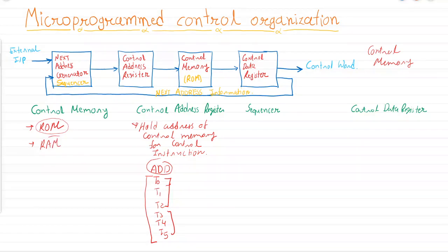RAM holds content that can be altered and stores user process data, while control memory content is fixed and cannot be altered. In short, all instructions are static by nature at the hardware level. Whatever programming we do will look like dynamic programming, but at the hardware level it is static. Next is the control data register.